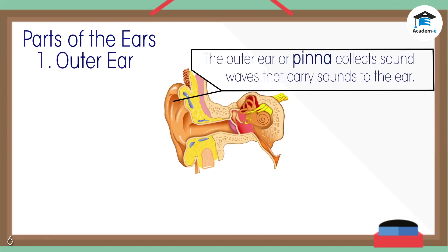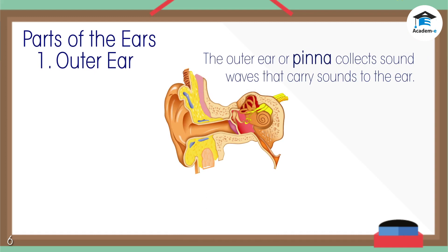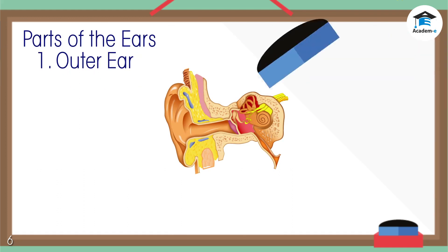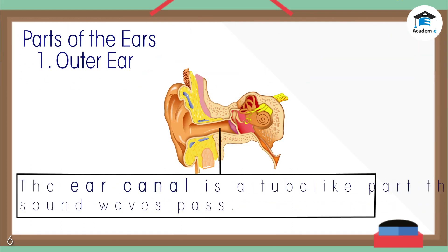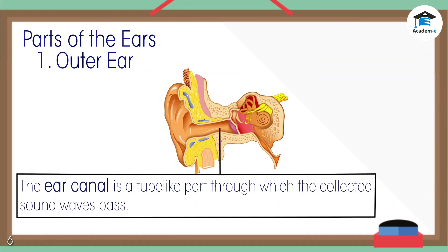The outer ear, or pinna, is the part of the ear that we can see. It collects sound waves that carry sounds to the ear. The ear canal is part of the outer ear — it is a tube-like part through which the collected sound waves pass.